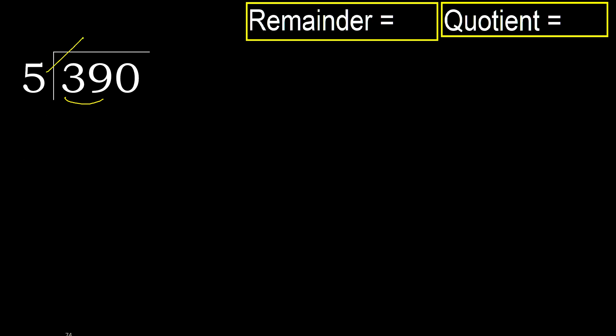5 multiplied by which number is nearest to 39 but not greater? 5 multiplied by 8 is 40 — 40 is greater. Multiply by 7: 35 is not greater. Subtract 4. Next.